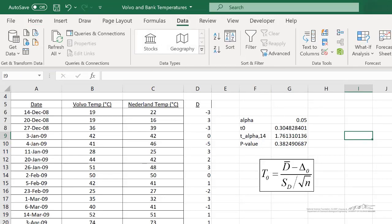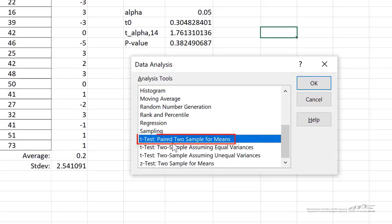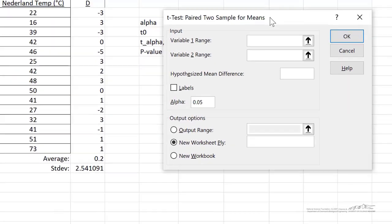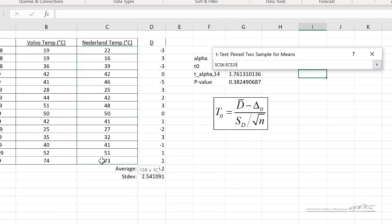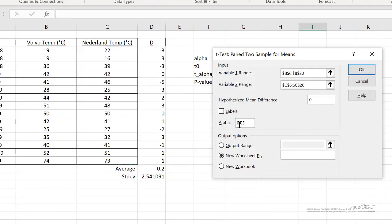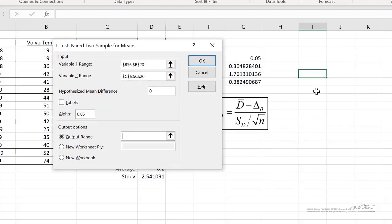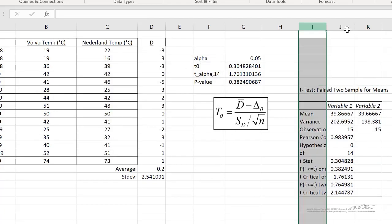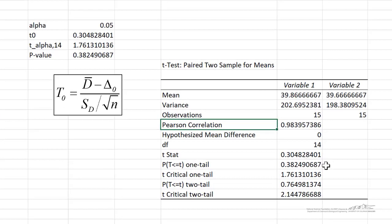We can also use the data analysis tool. If you go to data analysis and you go down here to a paired two sample for means t-test, we can use that. Our variable 1 would be our Volvo temperatures. Our variable 2 would be our Nederland bank temperatures. The hypothesis mean difference in this case is zero. We're going to use an alpha of 0.05. I'm going to put this onto the spreadsheet starting in cell I11. I go ahead and click OK. I can resize this real quick and it comes up with the same conclusion. It calculates a p-value down here for a one tailed test of 0.382. Keep in mind that these data analysis tools always perform a lower tailed test. Our test was that the Volvo temperature is greater than the Nederland temperature, but it just switches it around and it says Nederland temperature less than Volvo temperature. That's always a lower tailed test. We get a test statistic of the same and this is just another way that you can confirm or perform these paired t-tests in Excel.